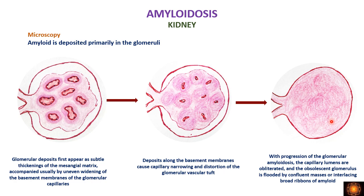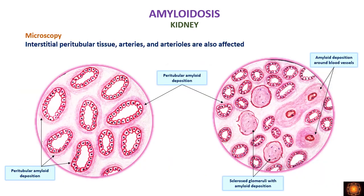In addition to glomerular involvement, we see amyloid deposits surrounding the tubules — peritubular deposition — and also deposition around the blood vessels, perivascular deposition. So in the kidney we have perivascular, peritubular, and glomerular deposits of amyloid.